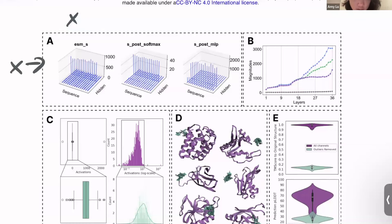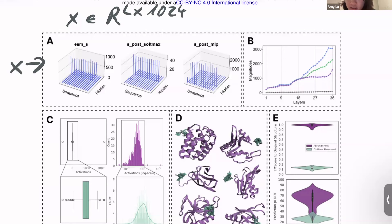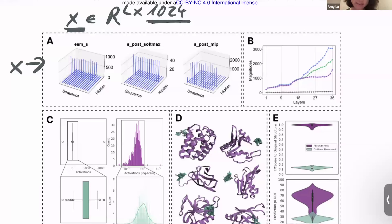In figure B, the gray line is the median activation across the entire X, and the other three lines are the top three values — much higher than the median. These are for the original ESMFold model. We throw in a single protein, get X of dimension 1024, and look at all the channels — ordering them by magnitude, the top three are much larger. We also examined several different embedding layers with different dimensions to see whether this was a problem with a specific layer or throughout.